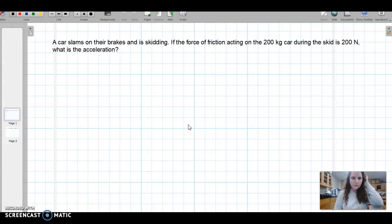This is number six. A car slams on their brakes and is skidding. If the force of friction acting on the 200 kilogram car during the skid is 200 newtons, what is the acceleration of the car?